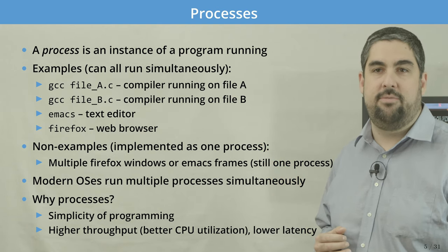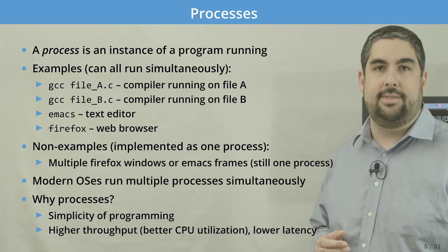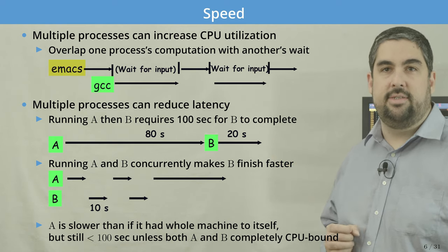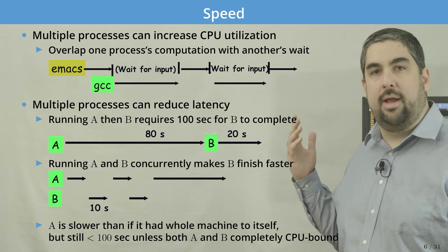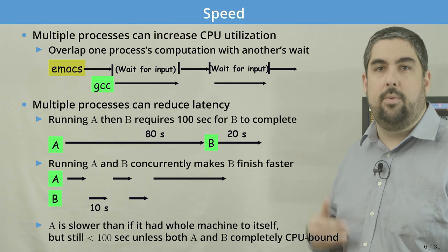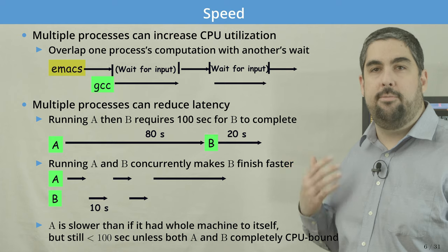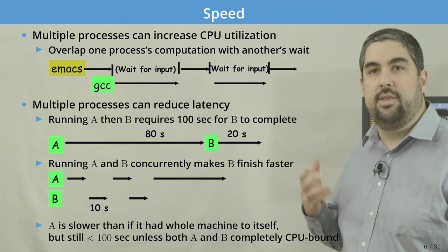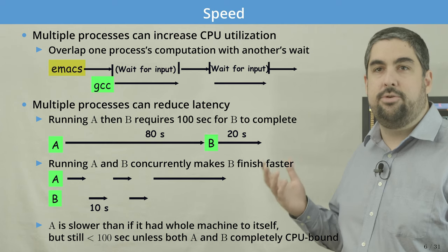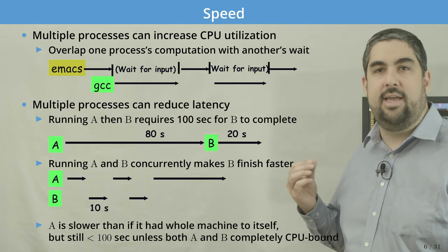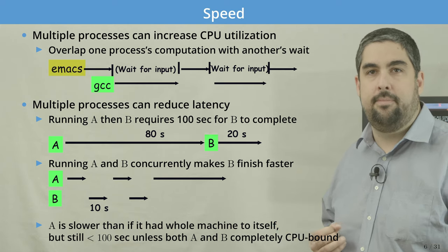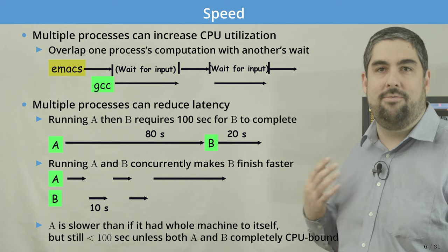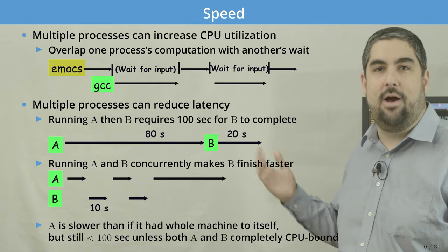Being able to use multiple processes is a way to achieve better utilization of hardware. We could run them on different processors to achieve better throughput and possibly lower latency. For example, I might be running GCC and Emacs at the same time. When Emacs is waiting for my input, the OS will run GCC on the same system. This is what the operating system does with techniques called scheduling — allowing us to run two processes almost simultaneously, keeping the hardware always busy.